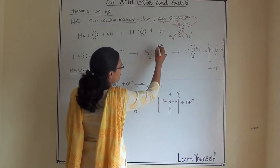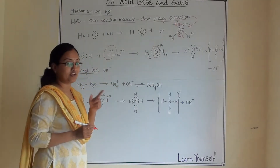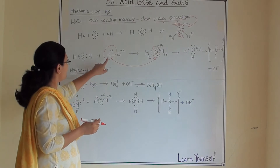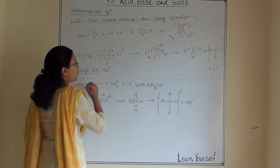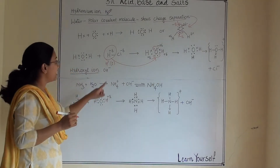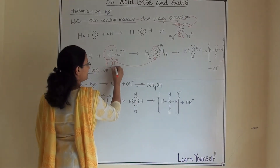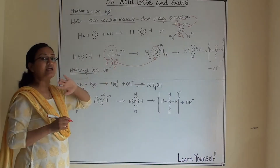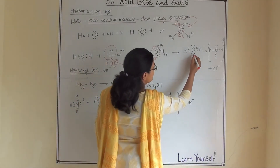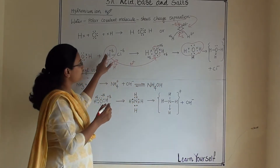Within the water molecule, the two lone pairs are unused. So this H+ of the acid will attract towards the unused pair of electrons. Hydrogen has atomic number one and if it donates one electron it becomes H+. This H+ doesn't have any electrons, so it will go and combine with the water molecule.